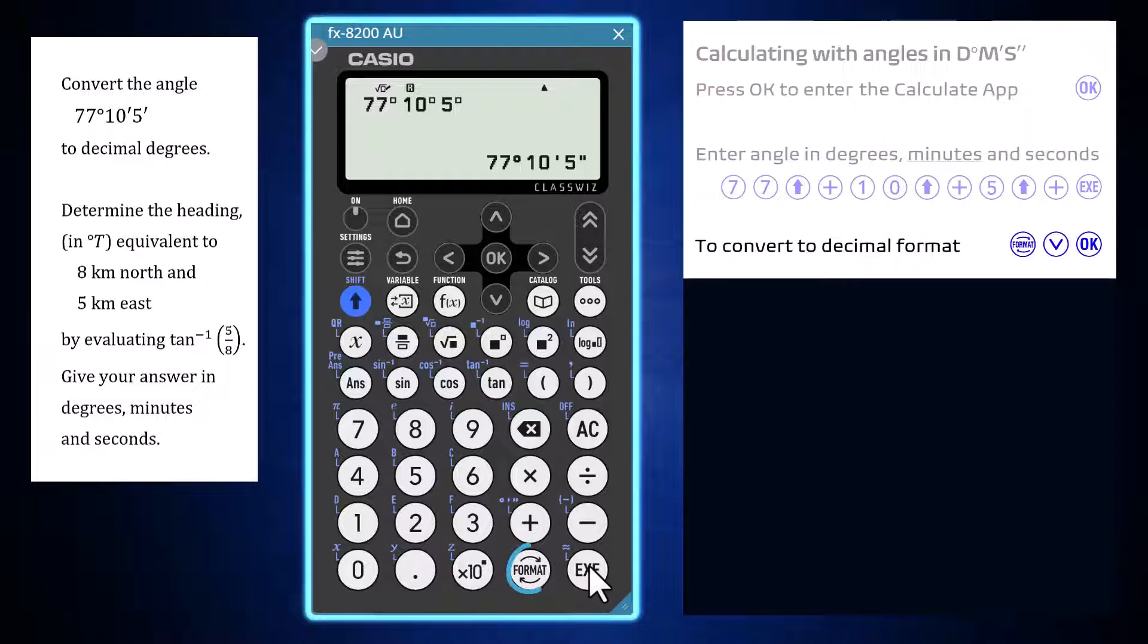With the angle entered, press the format key and select the decimal format using the down arrow and OK to convert this angle to decimal degrees.